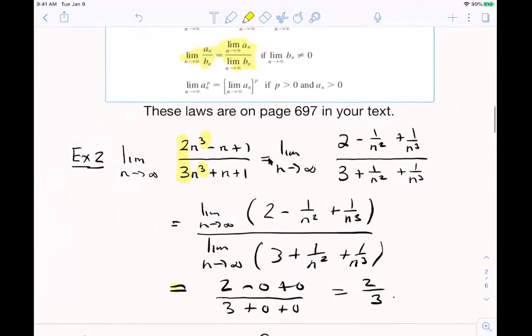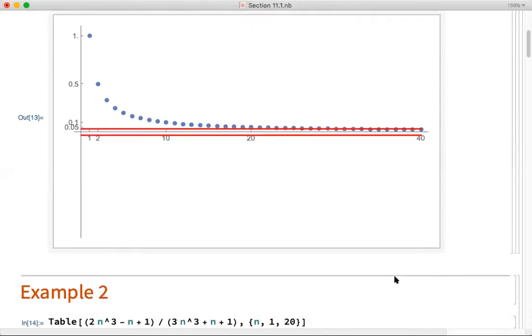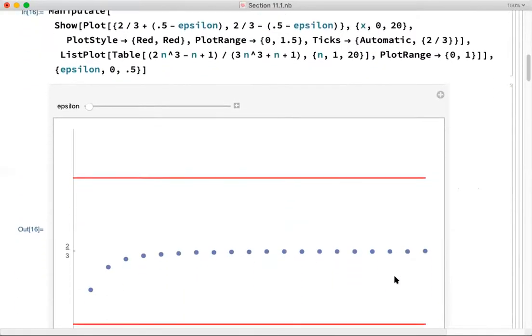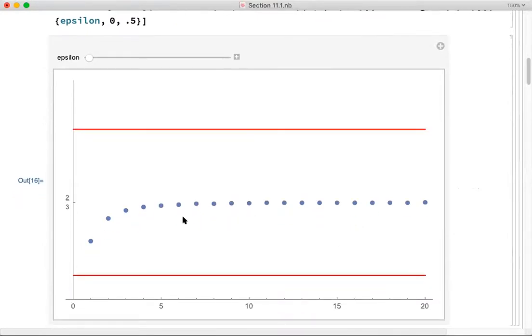So that theorem that you use when you just looked at these coefficients and wrote the limit down because the degrees were equal, you're using limit laws when you use that theorem. So all those limit laws that you use for functions, they all hold for sequences too. We could switch over if you want to the Mathematica screen real quick. Let me do it because I can just show you one more time for this limit.